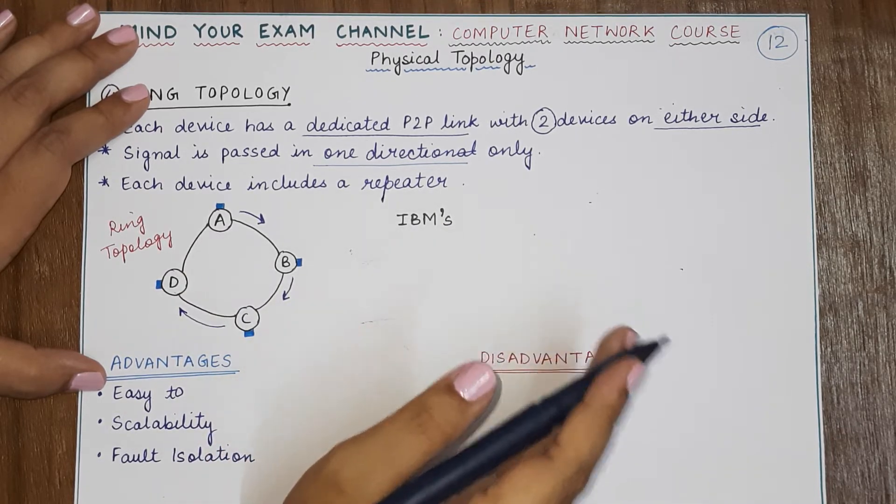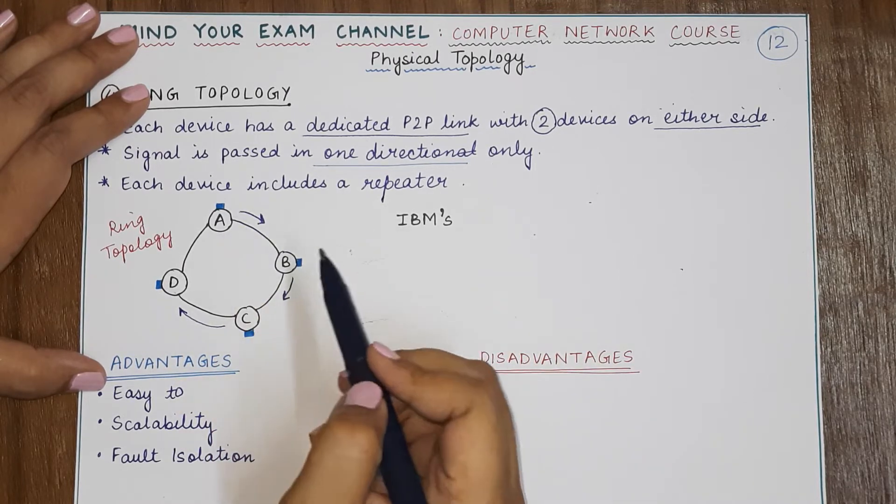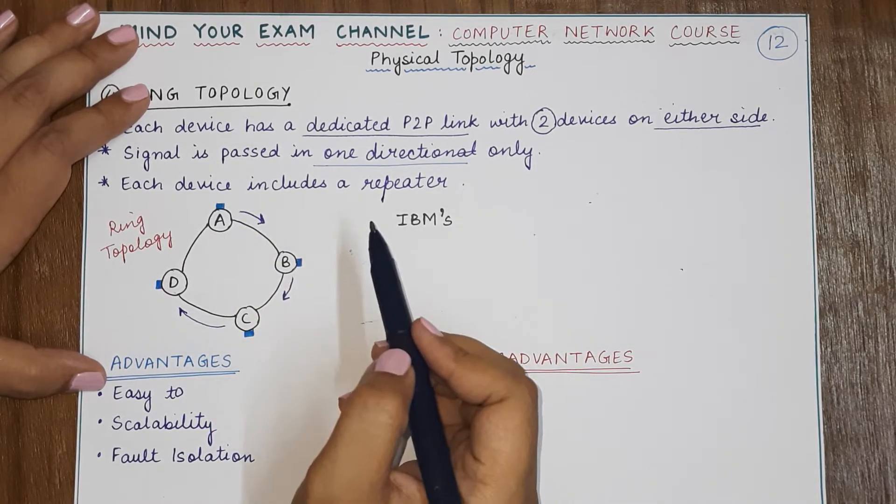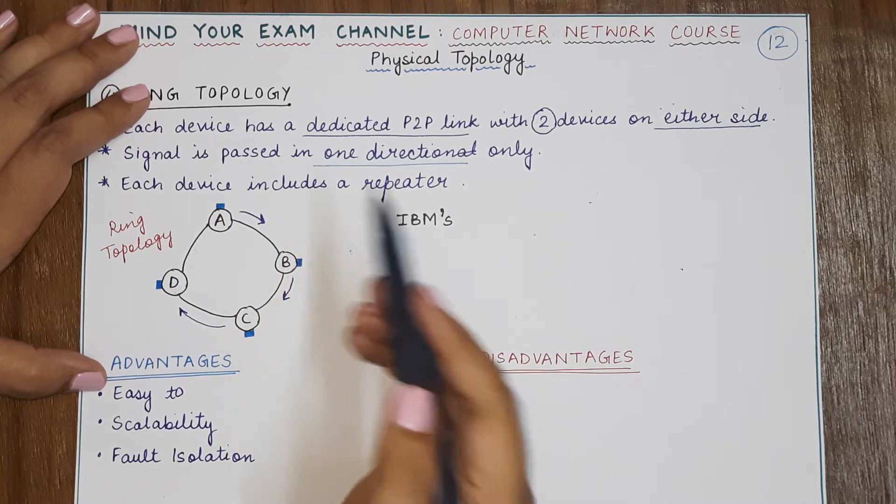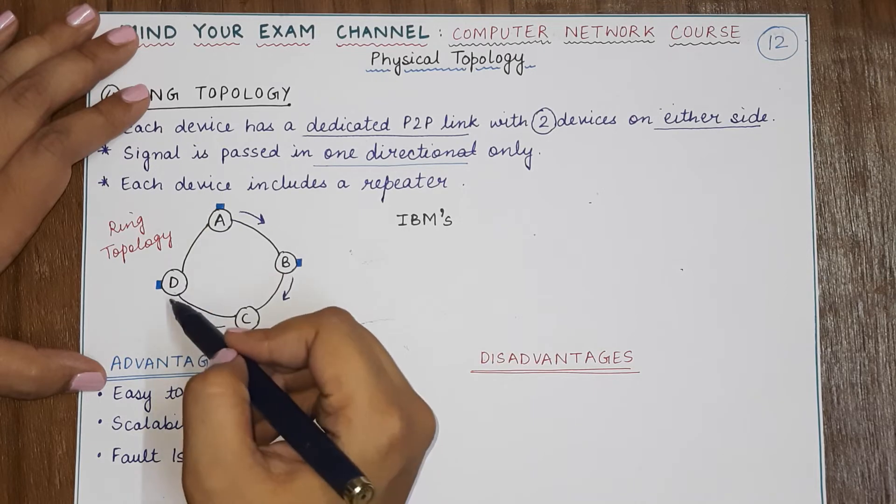Its strength does not become less during transmission. So every device repeats the signal which actually has to be forwarded to other devices through this ring topology.